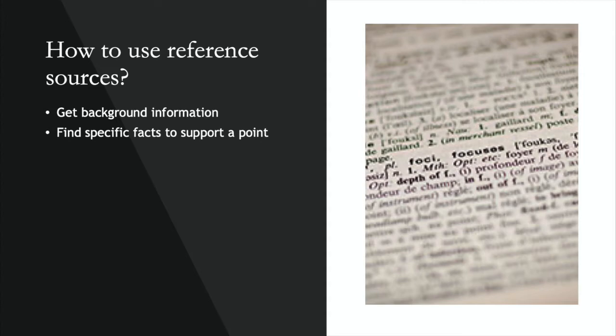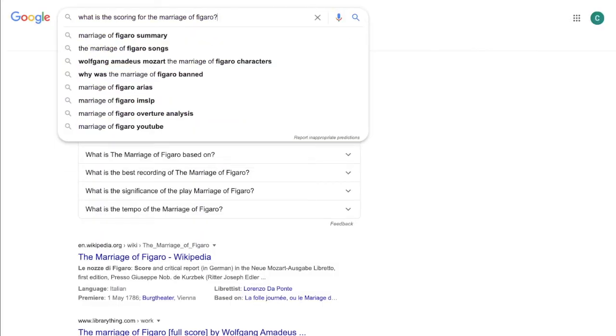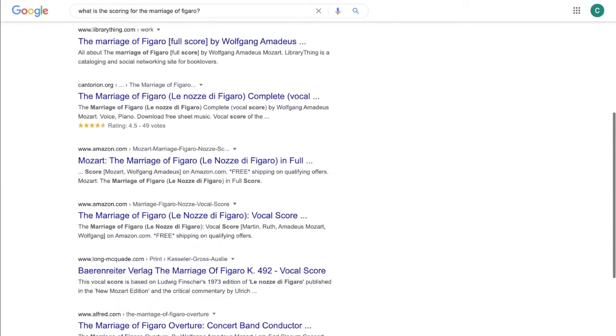For example, you might want to find out what the scoring is for the opera The Marriage of Figaro and the date that it was first performed. If you want to get this information from a reliable source, you might want to go to the Grove Dictionary of Music, look up the article on Mozart, and go to his works list. You could certainly look up the same information using a Google search, but you might have to scroll through many sites and you also might not be sure if that information is reliable.